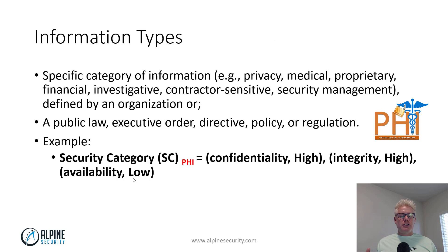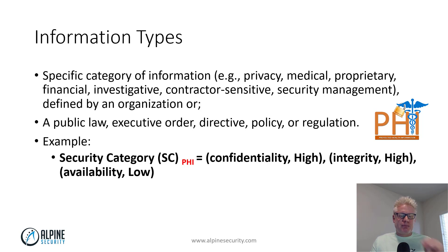A little more about information types — it's a confusing topic. There are lots of categories or types of information: it could be privacy, medical such as PHI, intellectual property, classified information, etc. There could be a law, directive, or requirement that mandates information be protected a specific way. The example here is for protected health information, or PHI. The security category for PHI has confidentiality of high — we don't want someone to steal our health information — integrity of high — we don't want records altered — but availability can be low, since a patient doesn't need their records accessed all the time. These values could change based on the use case.